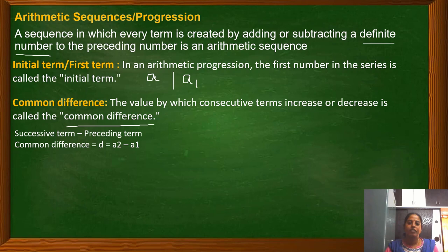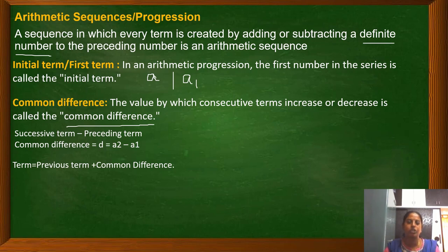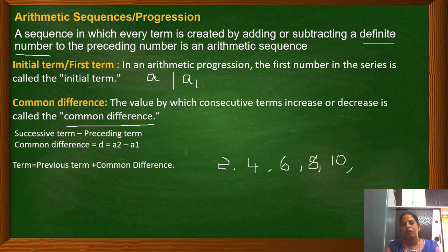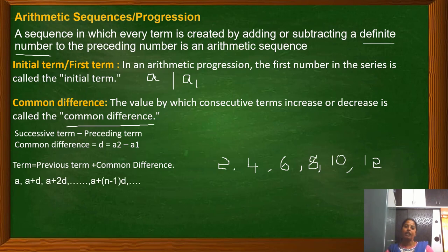To find the next term, we add the common difference to the previous term. For example, in the staircase sequence: 2, 4, 6, 8, 10 — adding 2 each time. The sixth step uses 10 + 2 = 12 bricks. The general form of an AP is: a, a+d, a+2d, a+3d, ... where 'a' is the first term and 'd' is the common difference.